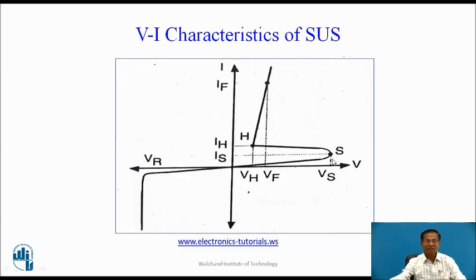When supply voltage is more than VS, SUS turns on and suddenly the voltage reduces and current increases rapidly and the device exhibits the negative resistance region and the negative resistance region is represented by the region SH. Because of this reason, SUS can be used as a relaxation oscillator.